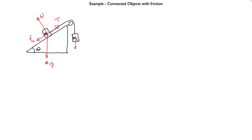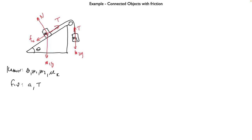Does mass two change at all in its free body diagram? Friction doesn't affect mass two — it's not touching anybody. There's no surface of contact for mass two. There's just a tension pulling up on it, so nothing changes with mass two. We know the angle, mass one, mass two, and the coefficient of kinetic friction, and of course little g. We're going to find the acceleration and the tension in the string.